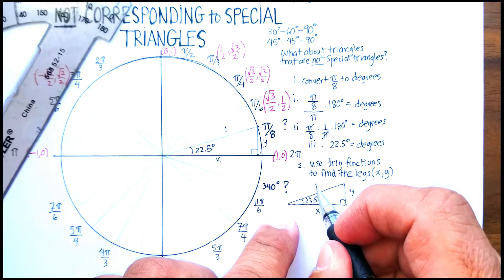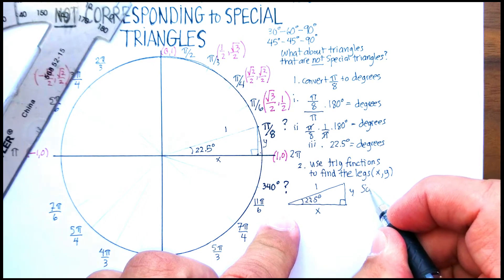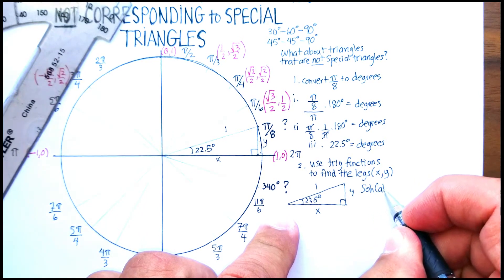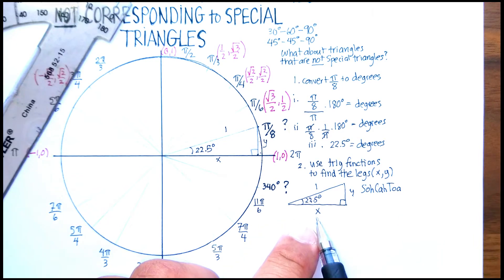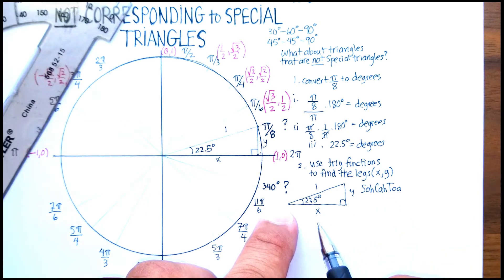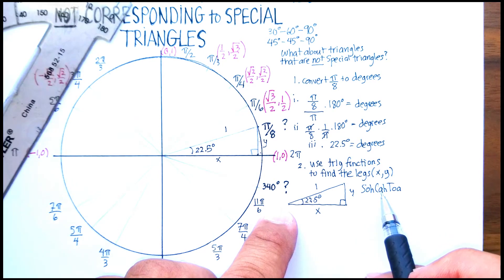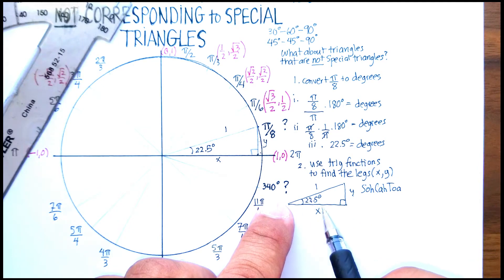So using SOH-CAH-TOA, and we want to find the x—which one of these three, sine, cosine, or tangent, will help us find the x? Well, we know that cosine, which is the adjacent over the hypotenuse, adjacent side over the hypotenuse, will find our x value.